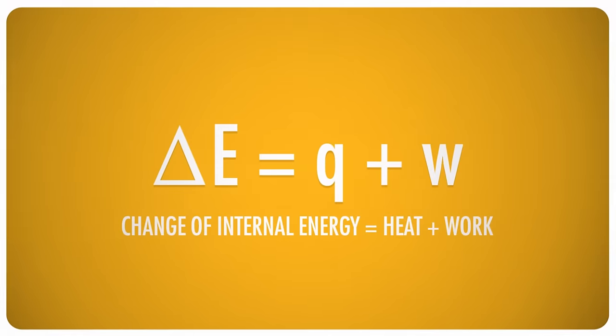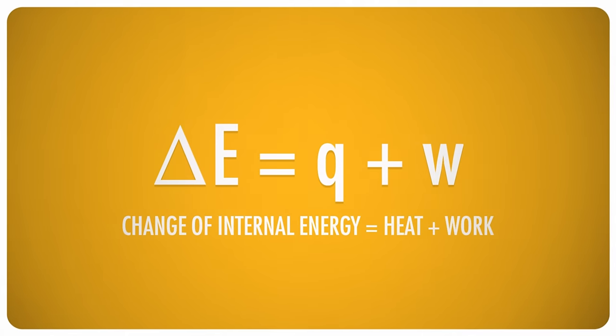Every system has an internal energy, the sum of all that system's kinetic and potential energy. The internal energy of a system is represented by a capital E, and usually we're interested in changes in that system. And the way we represent change in chemistry and physics is with a Greek letter delta. So we stick a delta in front of the E for delta E, the change in the energy of the system. The change in energy of a system is equal to the heat plus the work, the simplest equation you ever get to see here on Crash Course Chemistry.